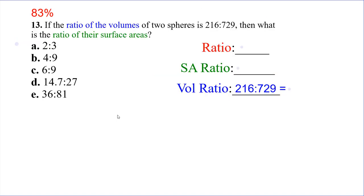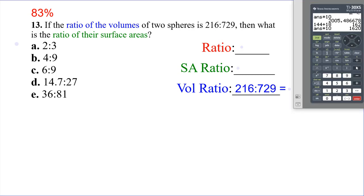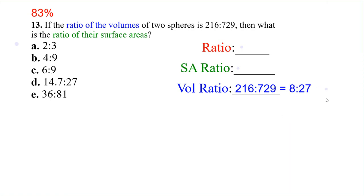Number thirteen: the ratio of the volumes of the spheres is given — what is the ratio of their surface areas? We're going from the three-dimensional ratio to the two-dimensional. First, simplify: 216 divided by 729 reduces to 8 over 27. Now we find the ratio by taking the cube root to go from 3D to 1D. The cube root of 8 and the cube root of 27. If we hadn't reduced, we'd get cube root of 216 is 6 and cube root of 729 is 9, but 6 and 9 still reduce to two-thirds. Make sure you reduce your ratios; otherwise you'll get wrong answers. 83% of you guys missed it.